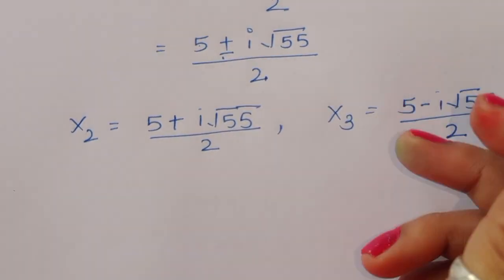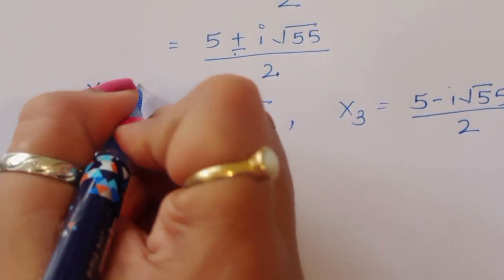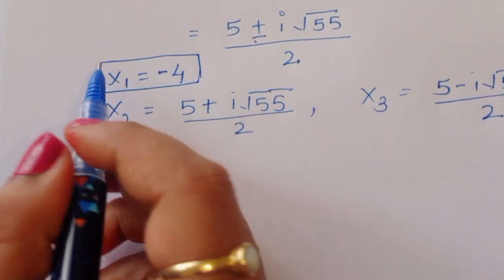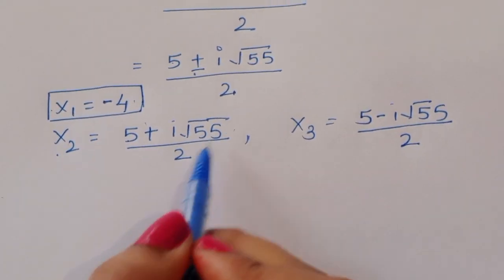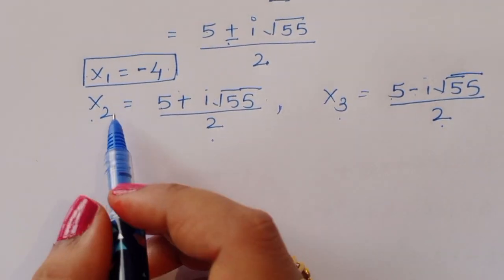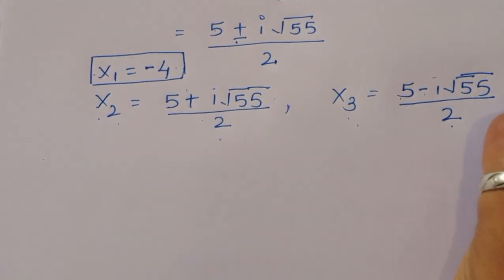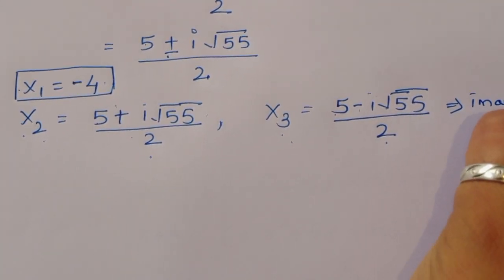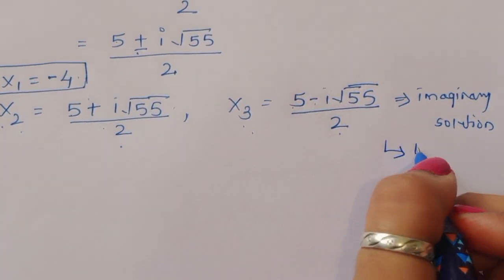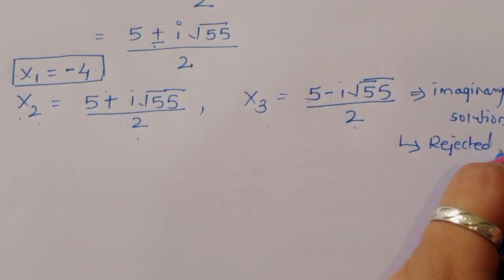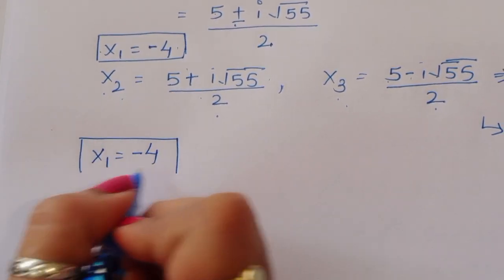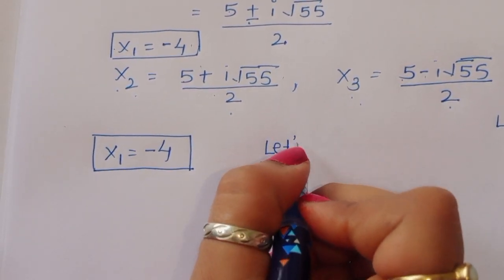x₂ and x₃ are imaginary solutions, so they will be rejected. We have one real solution: x₁ is equal to minus 4. Now let's verify this value is correct.